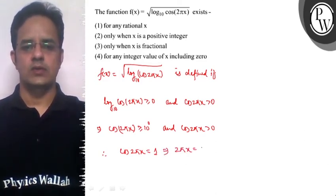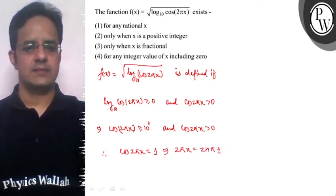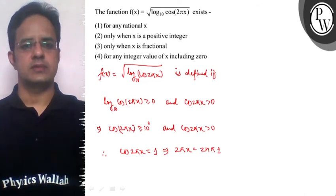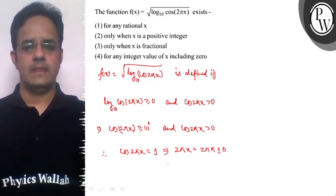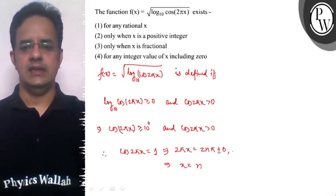we can say that cos(2πx) can only equal 1, which means 2πx = 2nπ ± 0 (since cos(0) = 1), which means x = n where n is an integer.